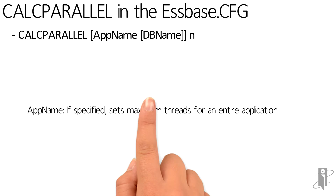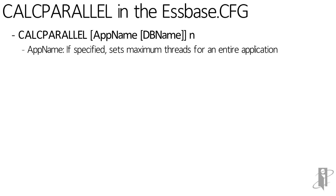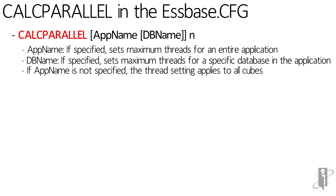To turn on parallel calculation at a server, application, or database level, go to your S-Space CFG and add a line that says Calc Parallel, then a space, then an application or an application with a database followed by a number. If you don't put a database, it'll set that number for all databases in the application. If you don't specify an application, it'll set that number of threads for the entire server.